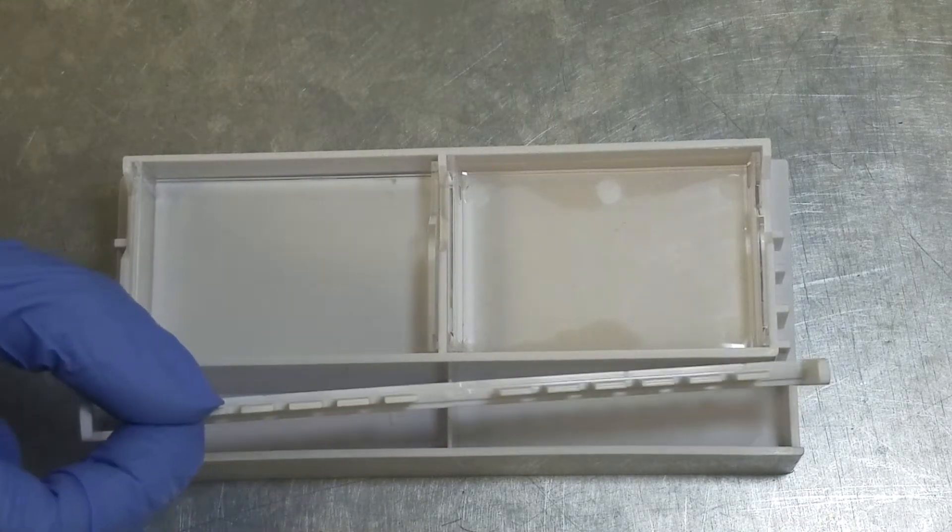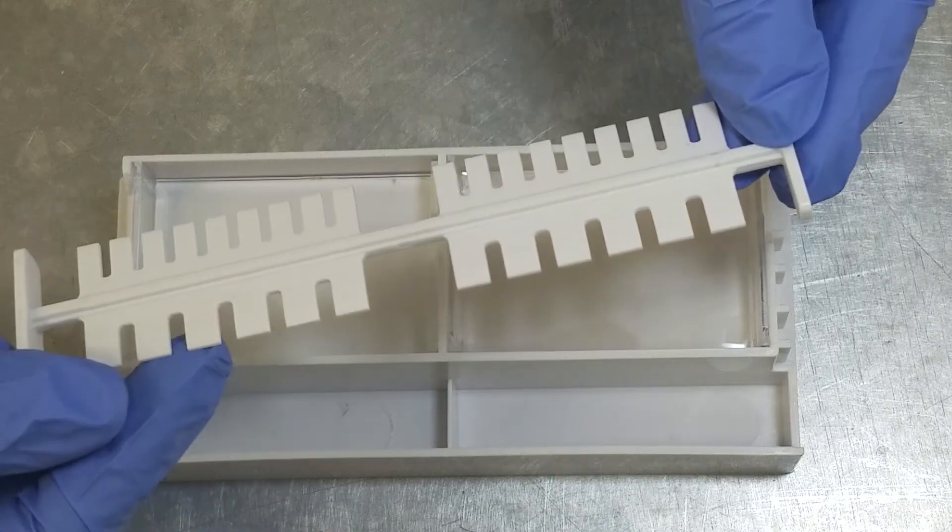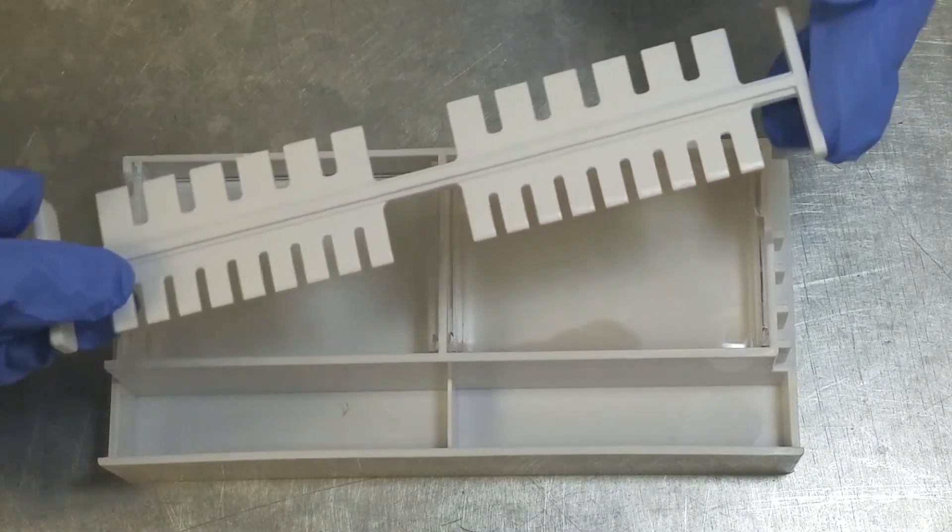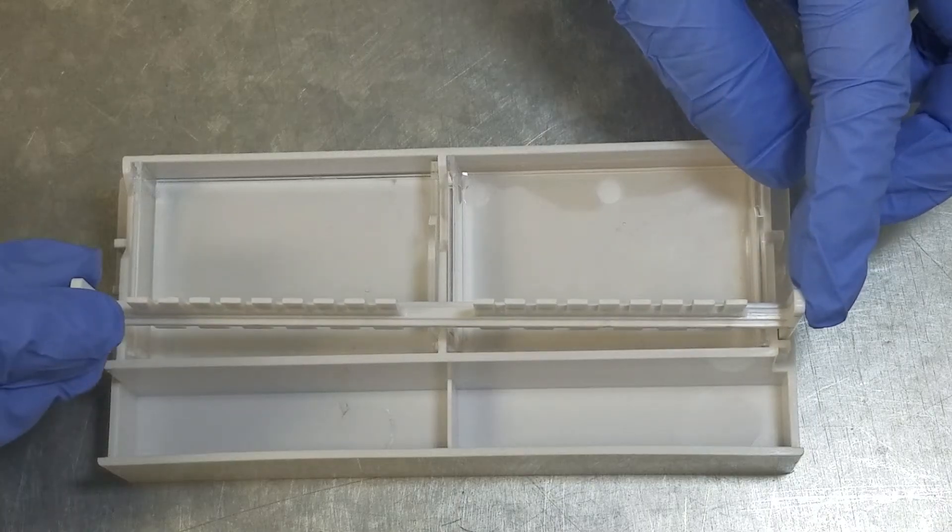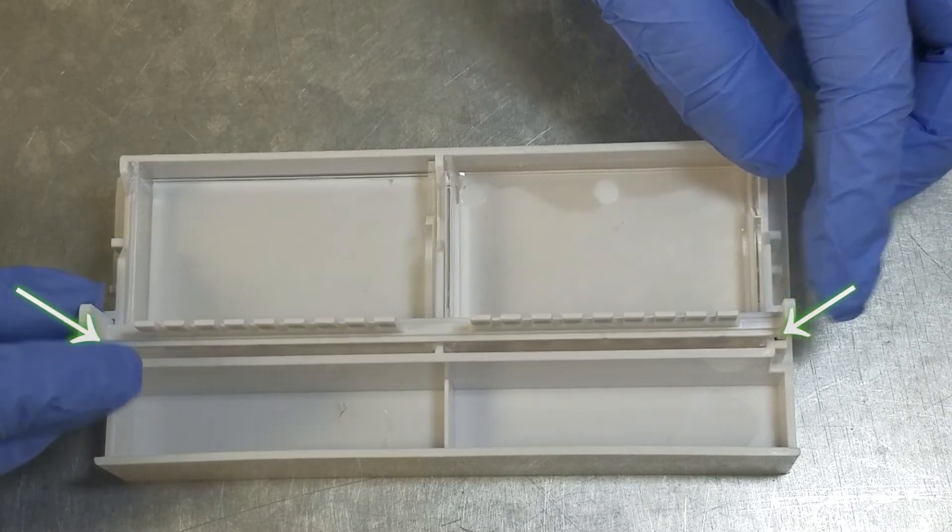Put the comb into the casting stand. You can choose to make a gel with either 6 larger wells or 9 smaller ones. If you are running DNA samples, put the gel comb into the furthest slot of the casting stand.